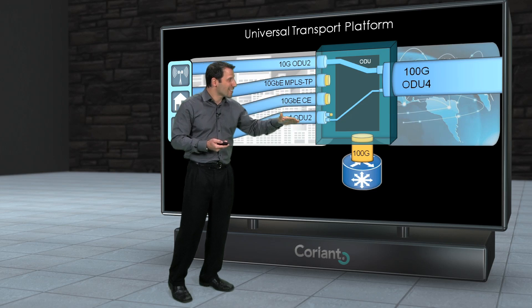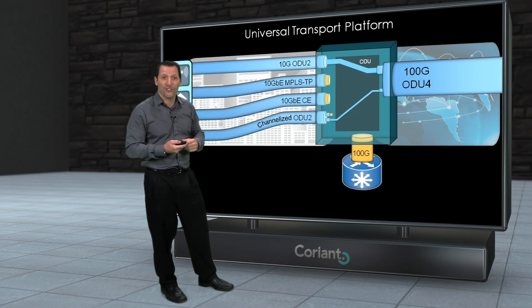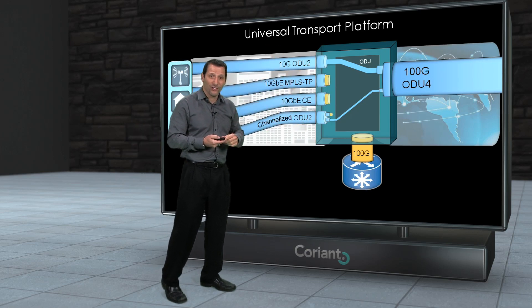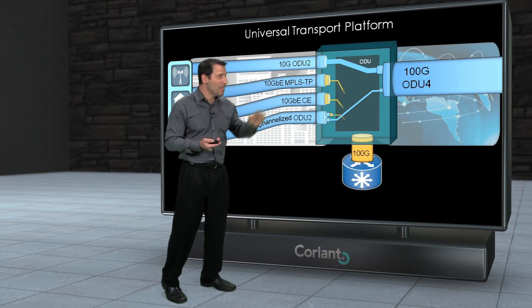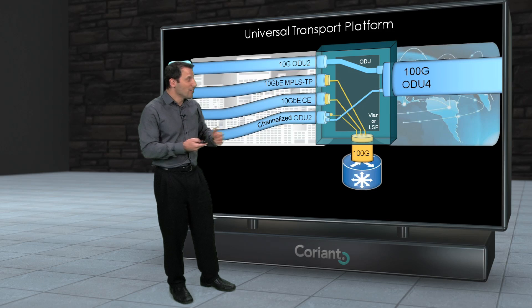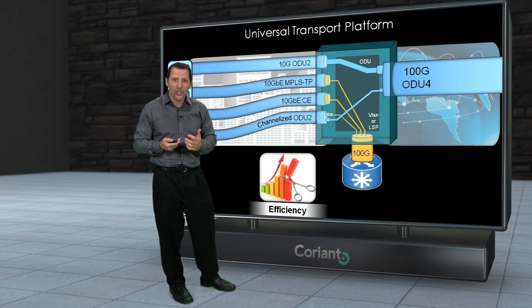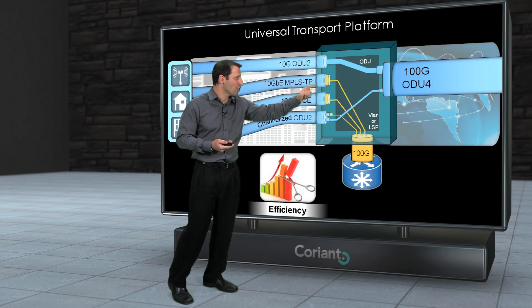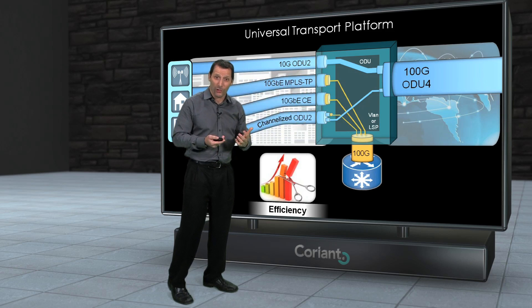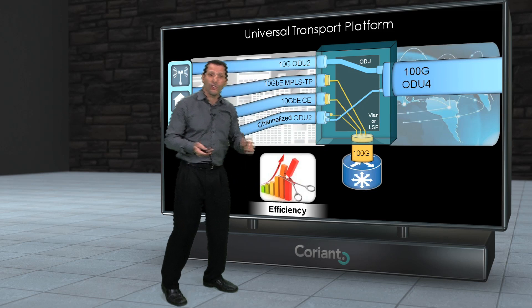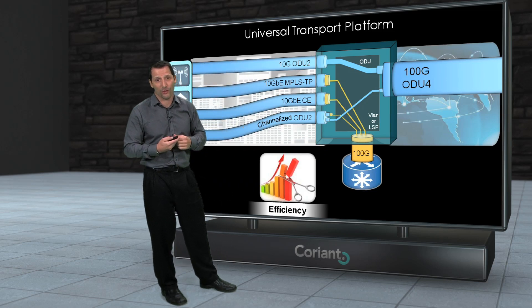Or even inside a channelized OTN container, I can reach inside that ODU0 and pull out individual packet flows. I can now take these packet flows from anywhere in the system, irrespective of how they came in, and steer them into very aggregated handoffs. This is going to dramatically improve the efficiency of the network, because I can have these aggregated handoffs — a collection of traffic from a number of ports in the system — and more efficiently use these resources through aggregated interfaces.